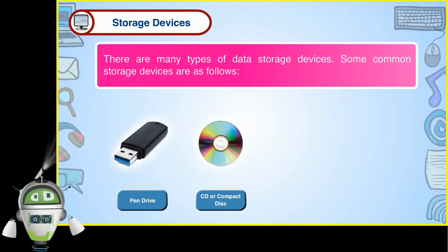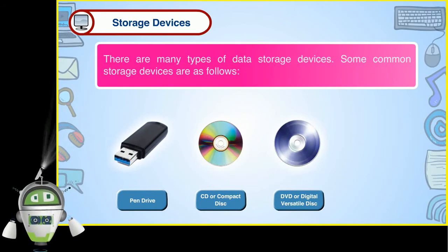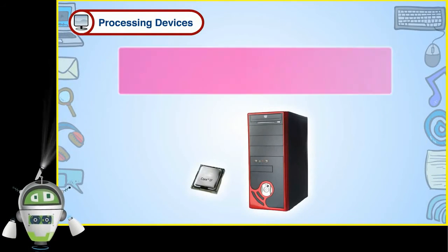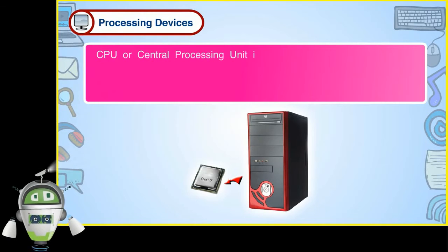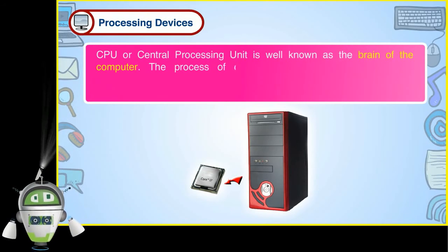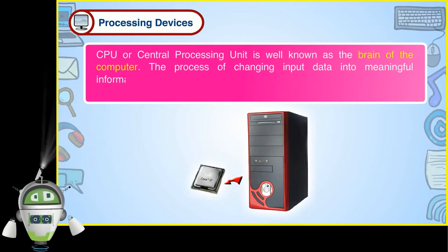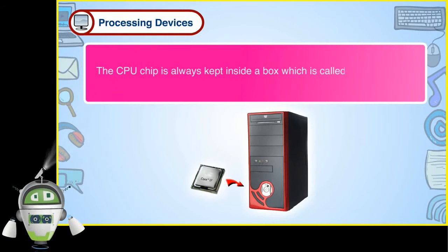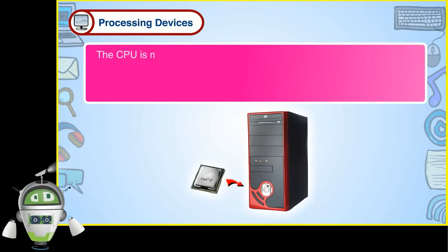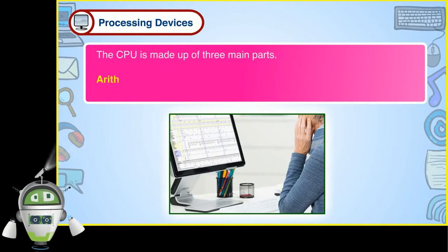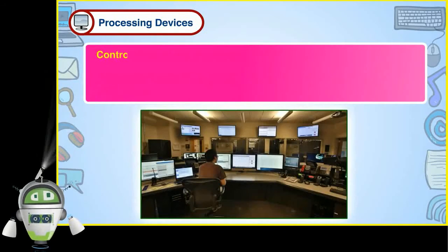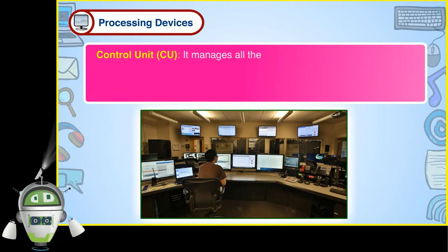Processing devices: CPU or central processing unit is well known as the brain of the computer. The process of changing input data into meaningful information is called processing, which takes place through the CPU chip. The CPU chip is always kept inside a box, which is called the CPU box. The CPU is made up of three main parts: ALU, which does all mathematical and logical calculations; Control unit, which manages all the operations of a computer; and Memory unit, which stores information temporarily and permanently as per the need.